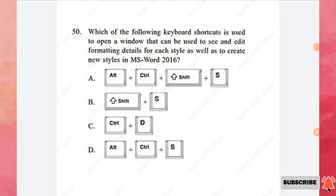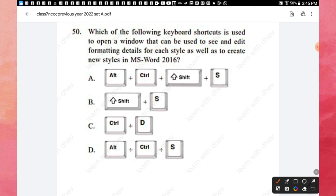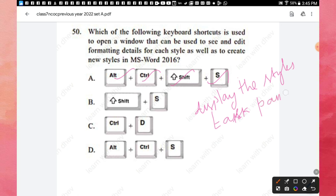Question 50: Which keyboard shortcut is used to open the window to see and edit formatting details for each style and create new styles in MS Word 2016? The shortcut key is Alt + Control + Shift + S, which displays the Styles task panel. Option A is the right answer. Thank you for watching — hope you all liked this video.